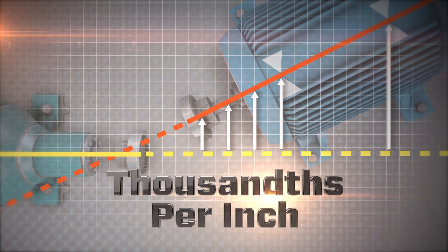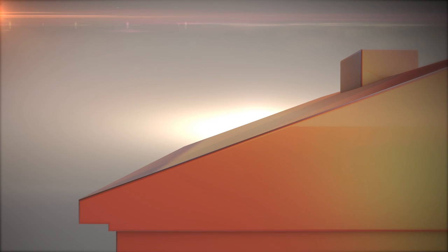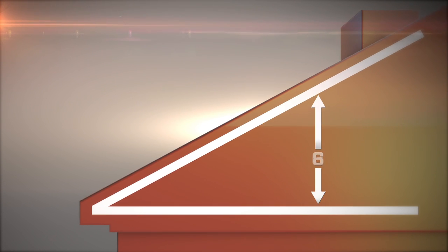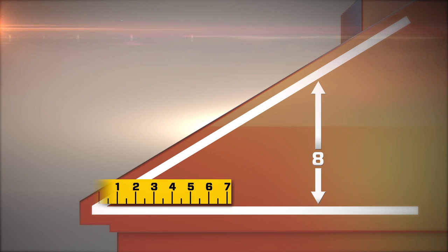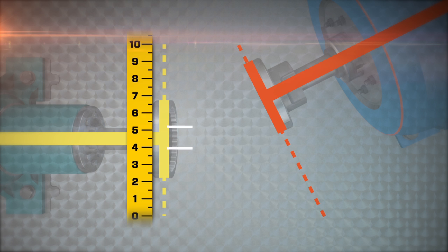This defines the slope of the roof. Similarly, in shaft alignment, we use 10 inches as the run. Pretend this run is the coupling diameter.